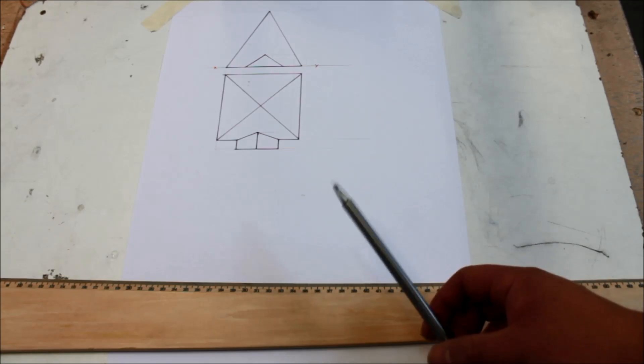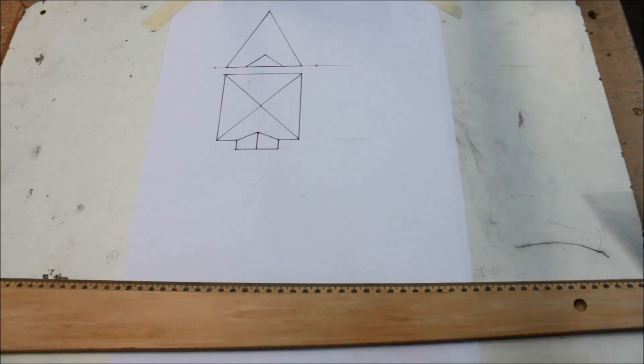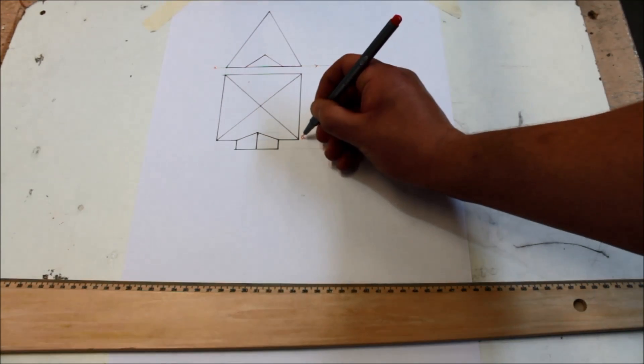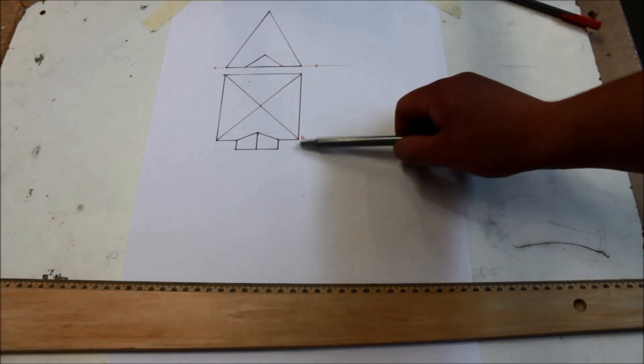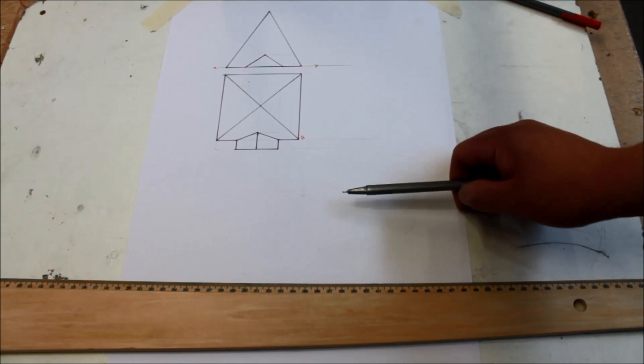Next thing we're going to put in is our spectator. So the spectator from point A here is, let me mark that in. The spectator is 8 meters away from point A at a 60 degree angle. Put in the spectator.